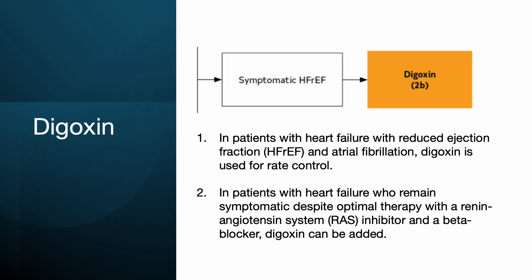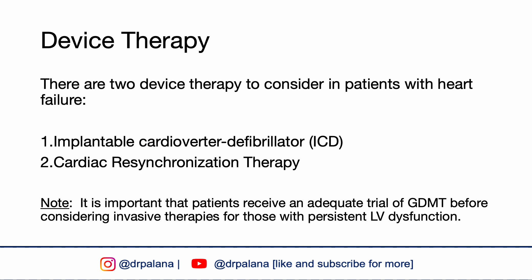Unlike the four medications under GDMT discussed previously, digoxin does not offer mortality benefits; however, it has been shown to reduce heart failure hospitalization rates. Digoxin is typically added in two scenarios: in patients with HFrEF and atrial fibrillation for rate control, and in patients with heart failure who remain symptomatic despite optimal therapy with a RAS inhibitor and a beta blocker.